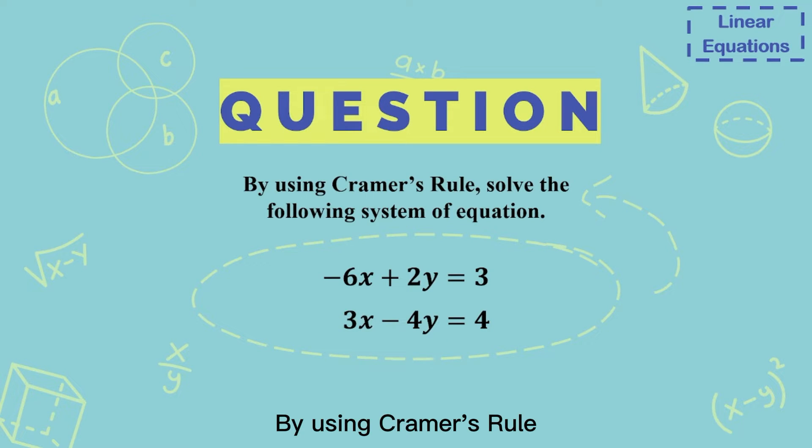By using Cramer's Rule, solve the following system of equations: -6x + 2y = 3, and 3x - 4y = 4.